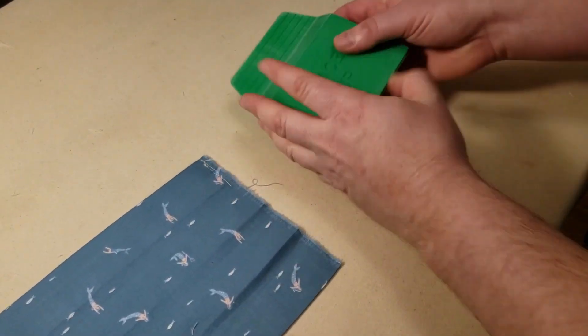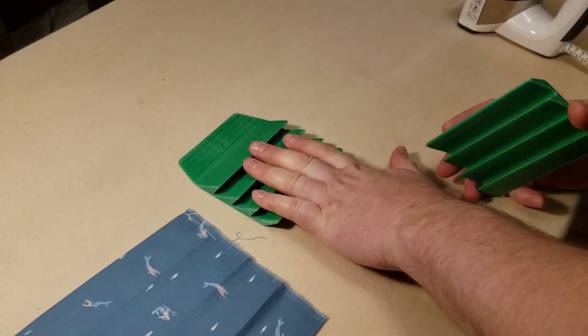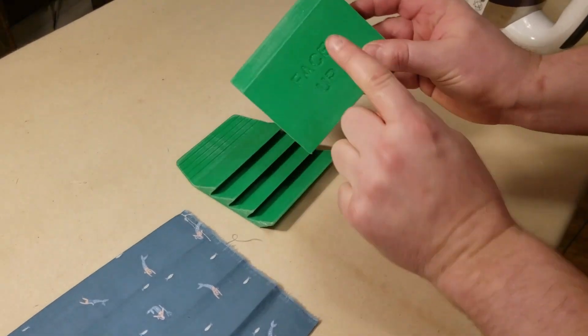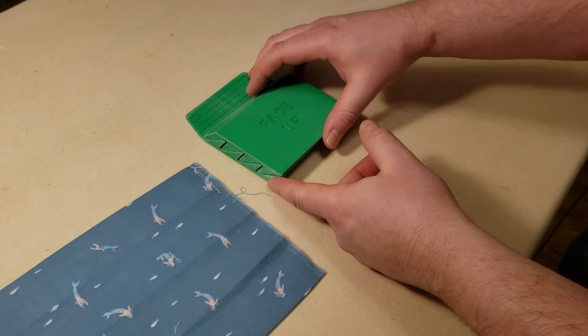So it's two parts. One part says face down. You just want to place that face down on the table, then the other part face up. We're going to sandwich the mask in between and basically do that.